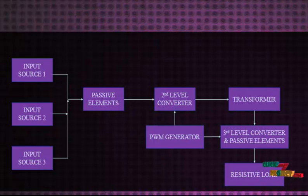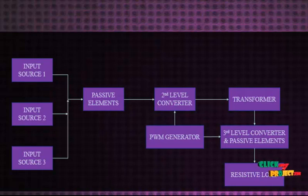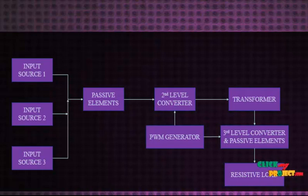The proposed multi-input converter is essentially based on the operation of the three-level isolated DC to DC converter. The secondary side rectifier can be either a half bridge rectifier or combined with a tapped winding for low output voltage applications. Since the PWM scheme is similar to that in three-level converters, the control complexity is not intensive.